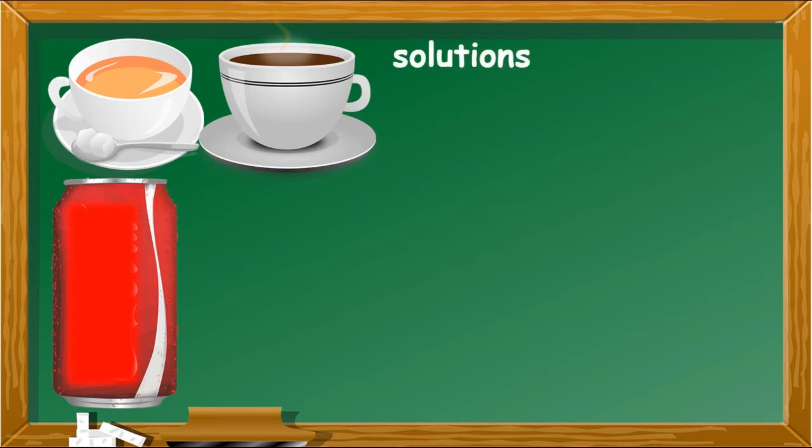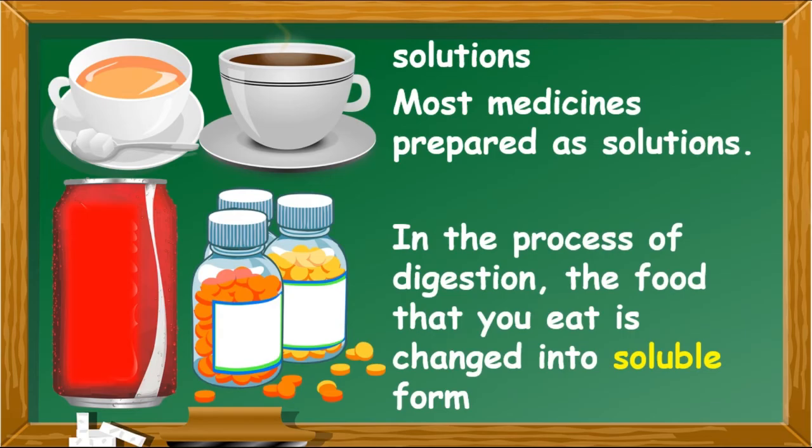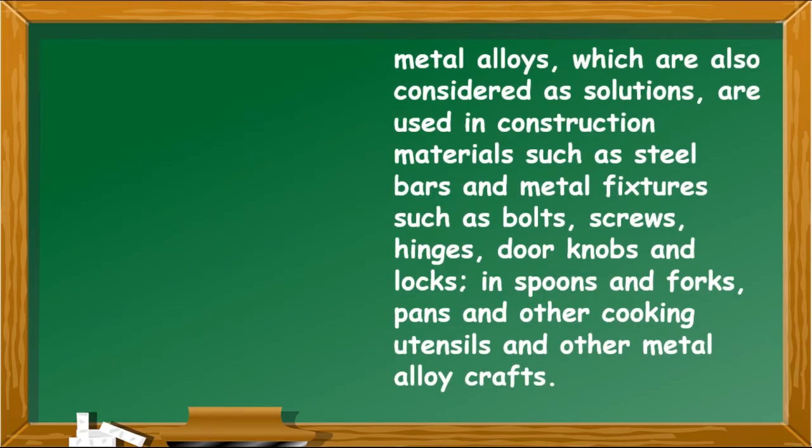More medicines taken internally to cure diseases are prepared as solutions. In the process of digestion, the food that you eat is changed into soluble form because the blood distributes or carries it to the different cells of the body.